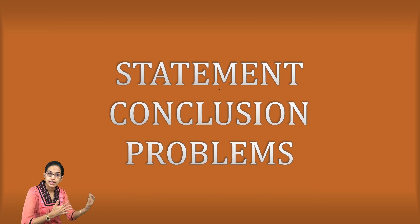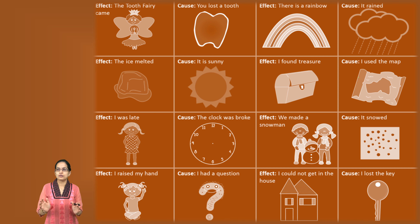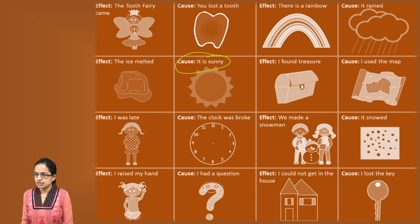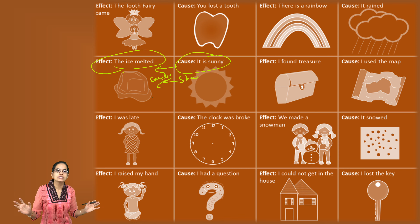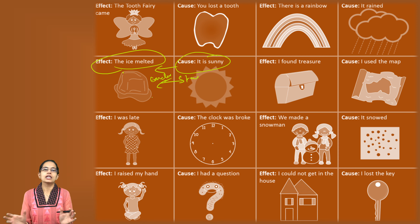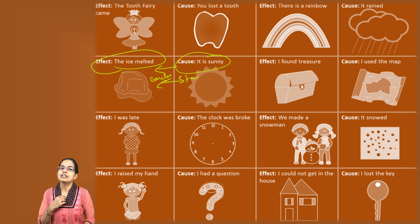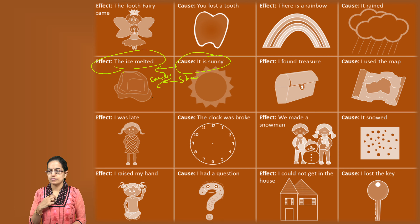If we look at all these scenarios, what we are trying to understand is we have a cause — let's say it's sunny — and an effect: the ice melted. There is a kind of statement I could say, and this statement is trying to bring a conclusion. Statement conclusion questions are usually a kind of cause-effect relationship, which is most commonly seen in most of the problems.